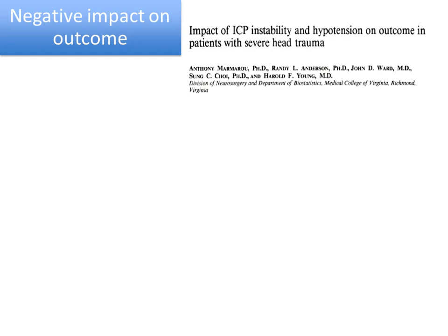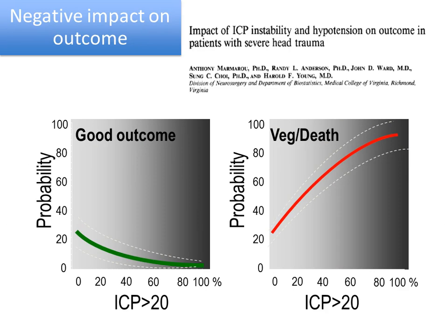But I think the other point is that we are thinking about improving neuroprotection and improving outcome. As Nino said, time spent over a threshold — and the threshold of 20 mmHg comes from the traumatic coma data bank; Marmarou published this data. They say that if you spend all your time over 20 mmHg, 100% of the time, your probability of dying is very high. If you don't spend time over the threshold, you will have a lower probability of a negative outcome.